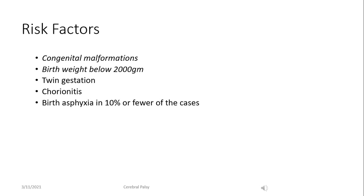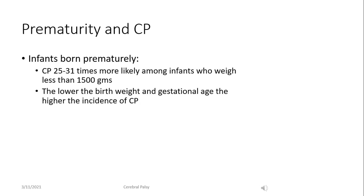The most commonly encountered risk factors in children with cerebral palsy are a history of congenital malformations or low birth weight below 2 kilograms. Other risk factors include twin gestation, the presence of infection, and birth asphyxia. Congenital malformations and low birth weight are inherent to the growing fetus, difficult to prevent, and independent of the delivery process. Infants born prematurely have a much higher risk of developing CP due to PVL and IVH; the lower the birth weight and gestational age, the higher the risk of developing the diplegic form.